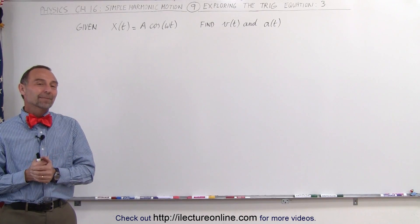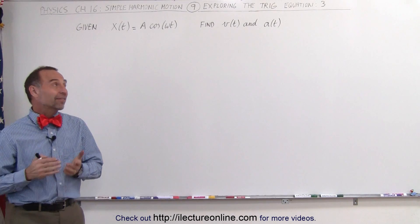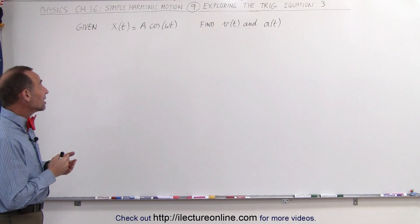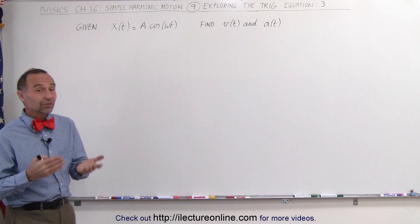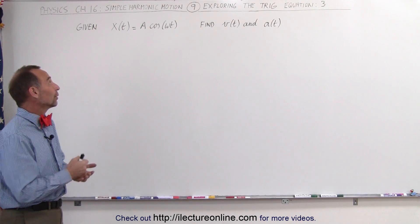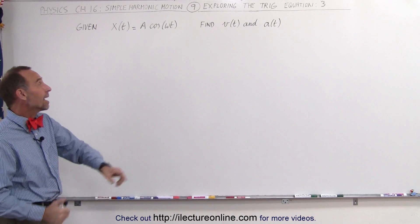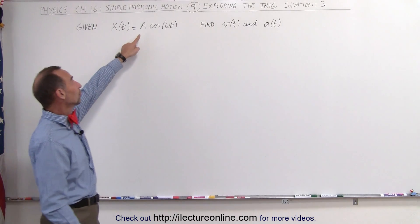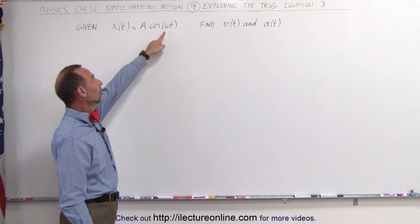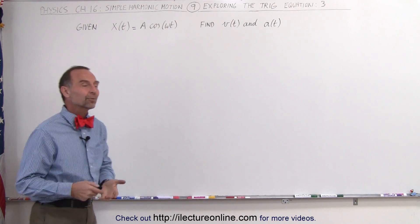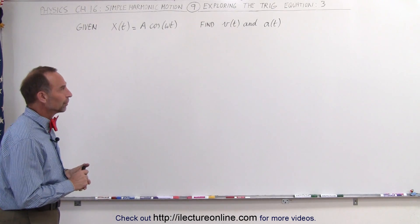Welcome to our lecture online. Here we have that same equation again: x of t, x as a function of t, is equal to A times the cosine of omega t, A being the amplitude of oscillation, omega being the angular frequency of the motion.